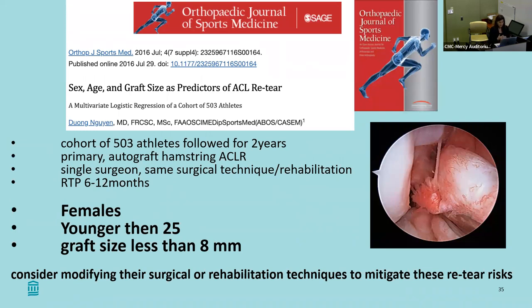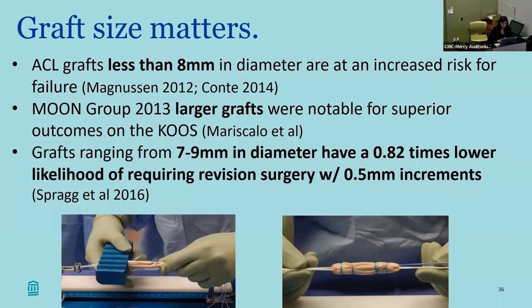This was a study that looked at over 500 athletes followed for two years. All ACL reconstructions used a primary autograft hamstring with a single surgeon and same technique. It showed that females, younger patients, and graft sizes less than eight millimeters had a much higher risk of retear. So graft size matters. These studies show that ACL grafts less than eight millimeters in diameter are at increased risk for failure.